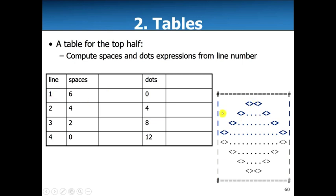This is line one, line two, line three, line four. On line one, there's a pipe character, there's six spaces. Line two, it's four spaces. Line three, two spaces. Line four, it's zero. And the dots, it's going to be 0, 4, 8, 12.